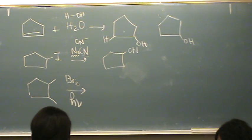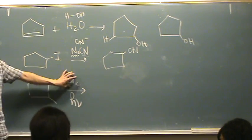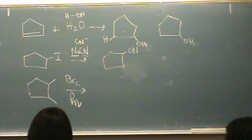The last one, this is a halogenation, because I've seen an alkane with a halogen over light. So I'm going to add one of those halogens, the bromine, to the most substitute carbon.